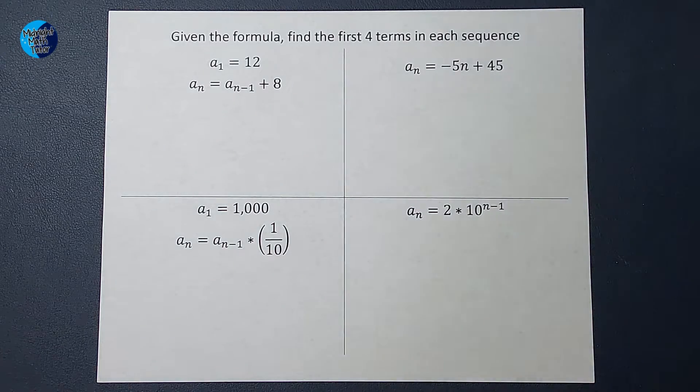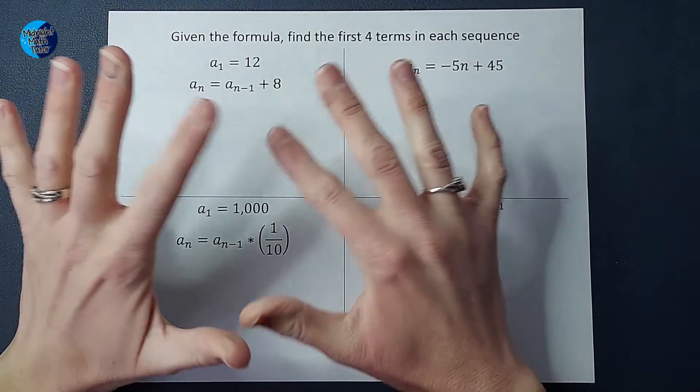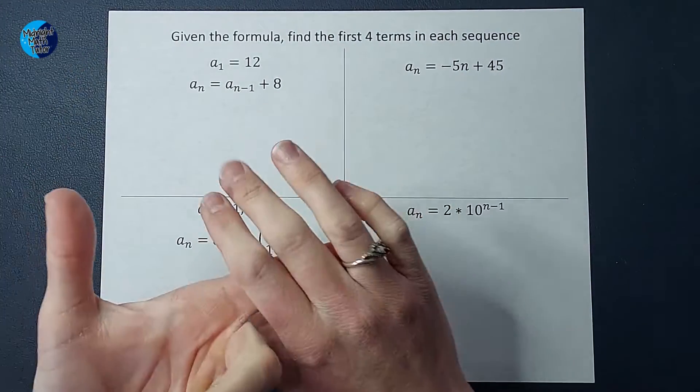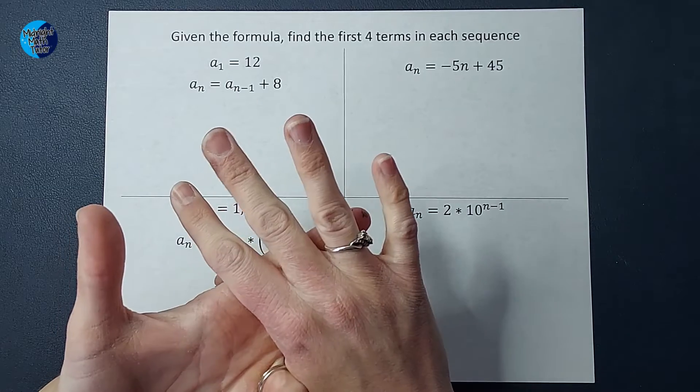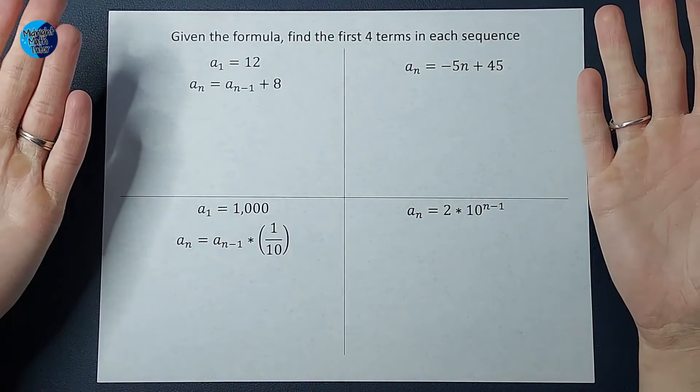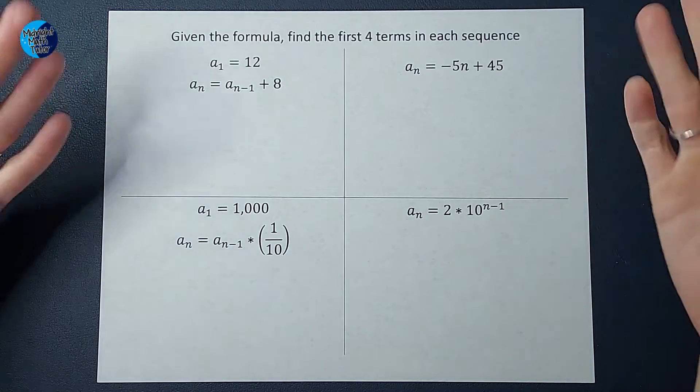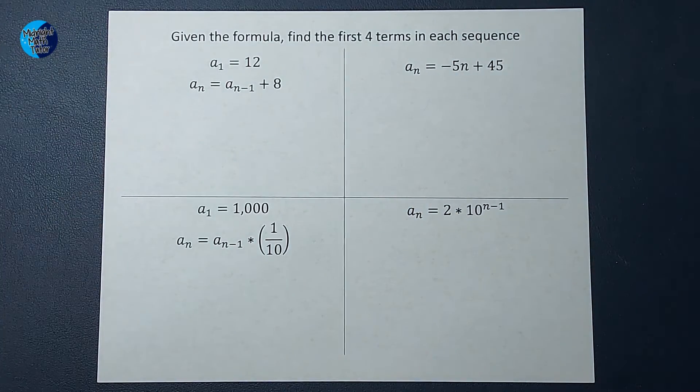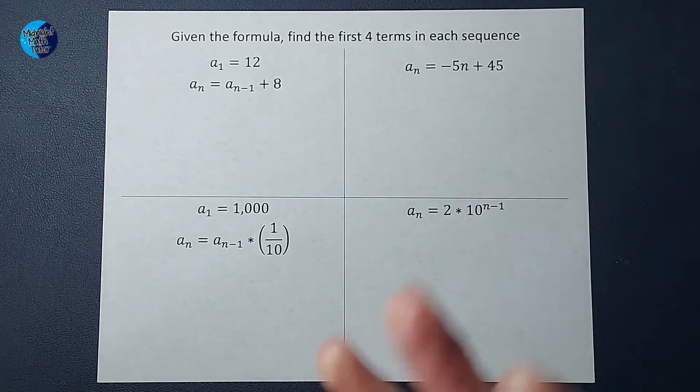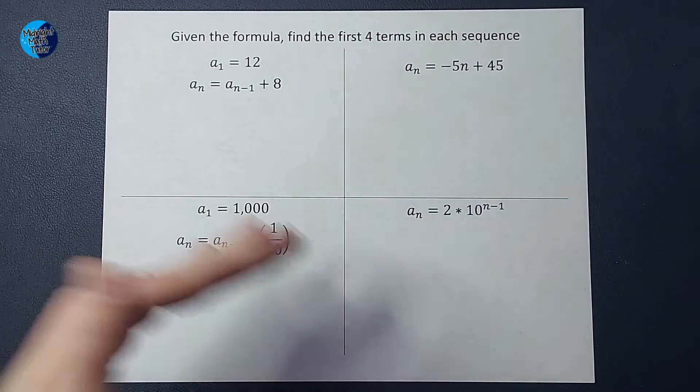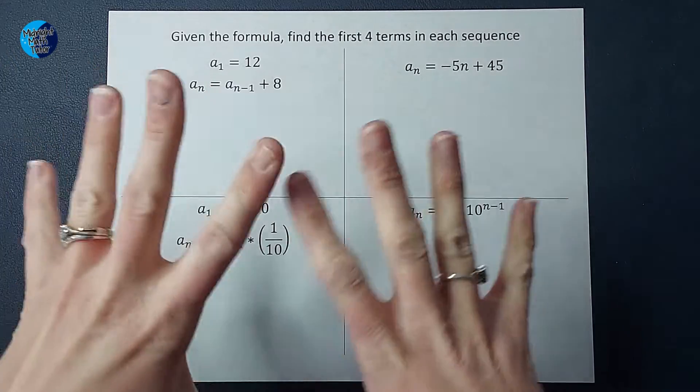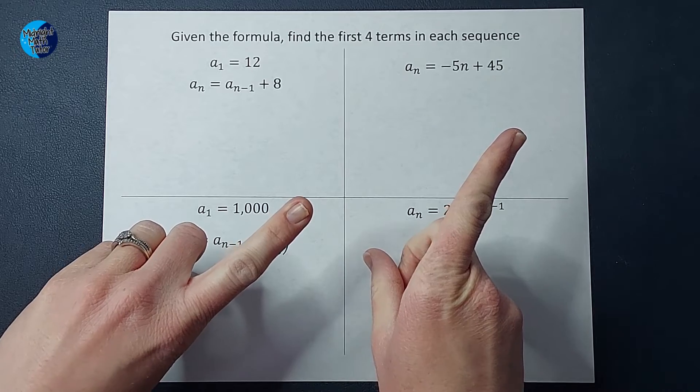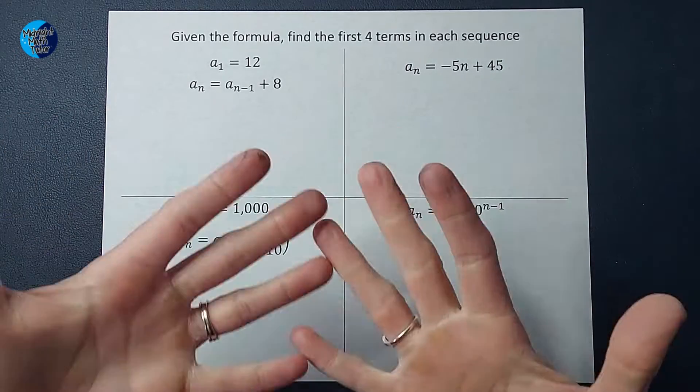Hey guys, if you are watching this video I'm assuming you have probably been working with sequences and finding recursive and explicit formulas from those sequences. Now we are just going backwards. They're giving us the formulas and they want us to figure out the sequence, or at least the first four terms in the sequence. Now if you haven't been doing it the other way, this could be a little confusing, so I'm going to refer you to a video in the corner to check out that will hopefully make this go a bit more smoothly.